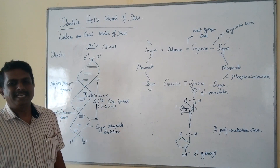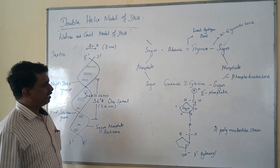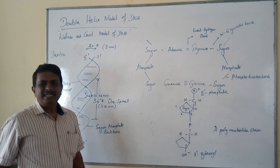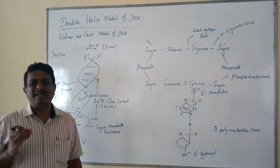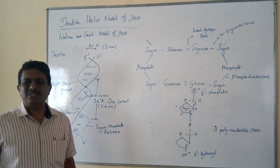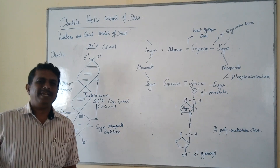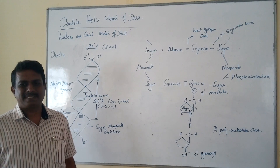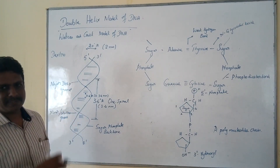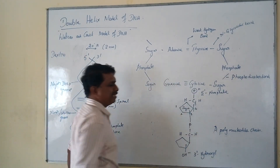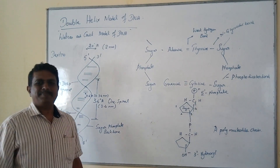The nitrogenous bases are attached to the deoxyribose sugar with the help of an N-glycosidic bond, and they are arranged at right angles to the backbone, comparable to the steps of a staircase. If you observe the two polynucleotide strands, you can find the pairing of one purine and one pyrimidine derivative.